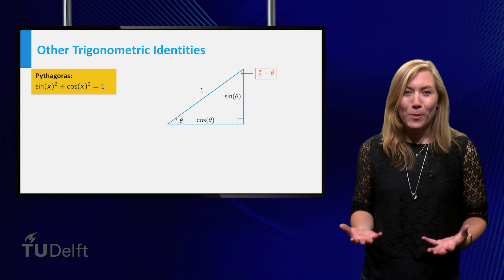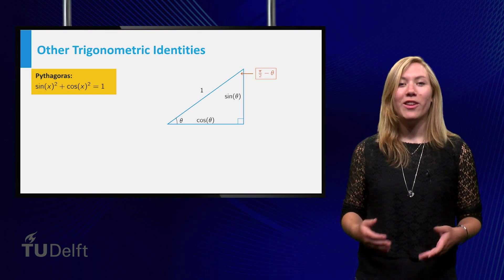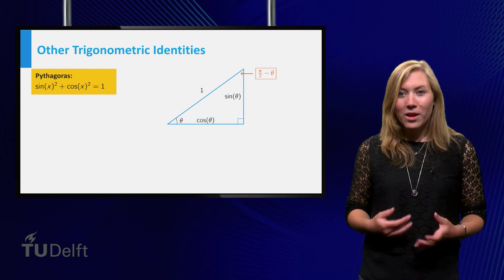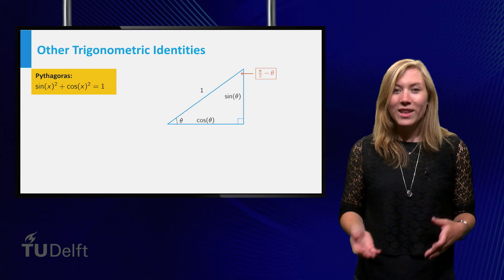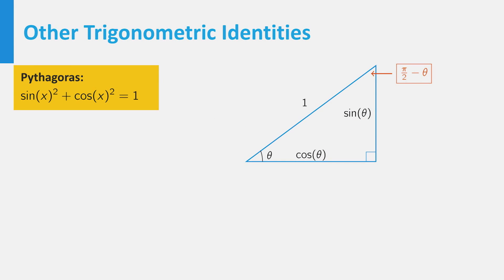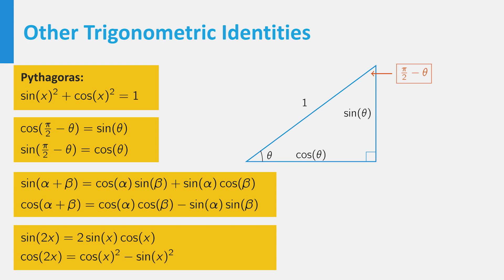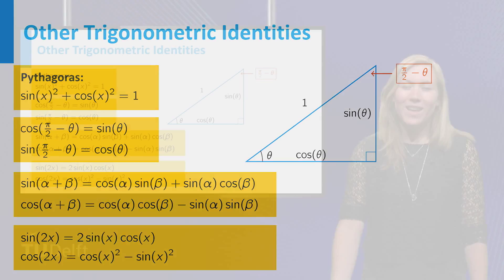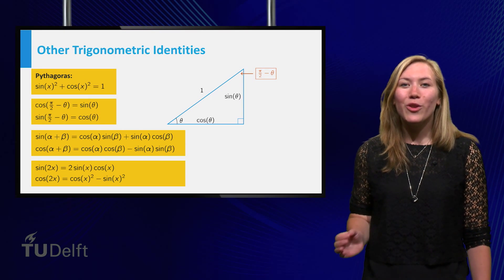Other important formulas for the trigonometric functions are sin²(x) + cos²(x) = 1, which follows from the theorem of Pythagoras. You also learned how to transform a sine into a cosine, and vice versa. You also recall the addition and doubling formulas. They can be very convenient to solve equations.